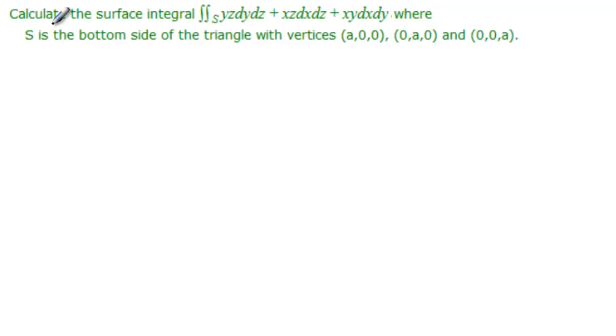The problem reads: calculate the surface integral over s of yz dy dz plus xz dx dz plus xy dx dy where s is the bottom side of the triangle with vertices (a,0,0), (0,a,0), and (0,0,a).